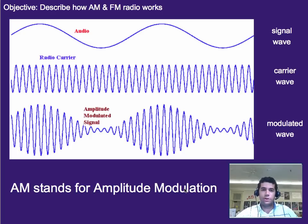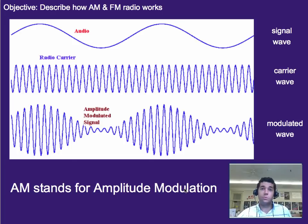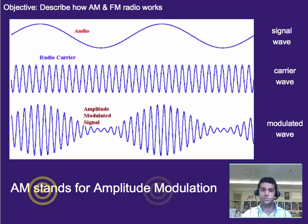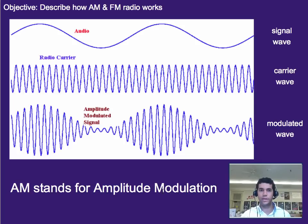Thinking back to the first radios — like the ones in our cars — we have two bands: AM and FM. There are other ways to use wireless communication, but these two are common and frame our thinking. AM actually stands for amplitude modulation. Modulation is just a fancy word for changing, or a way to modify something.